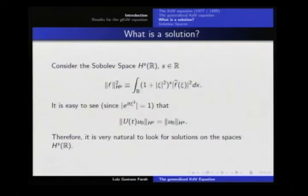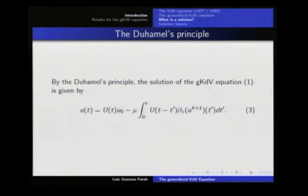If we take the natural Sobolev spaces, it's easy to see that since the modulus of this complex number is always one, the H^s norm is preserved by the linear part of the equation. So it's very natural to consider solutions in Sobolev spaces H^s. We are trying to find solutions in Sobolev space H^s, but first we need to have a hint about what is the range of S we can expect solutions in.